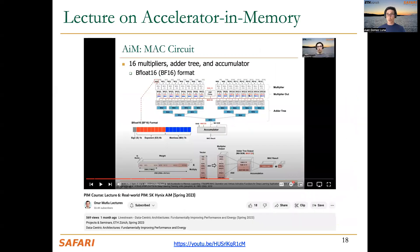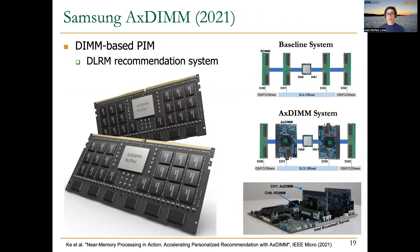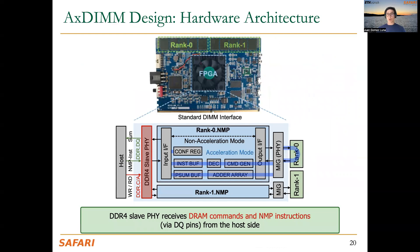Also from Samsung, a DIMM-based solution — in this case they extend the buffer of the DIMM with an FPGA that can be programmed. In this course we covered a design used for recommendation systems. In the FPGA, two near-memory processing units are implemented, each with the necessary units to execute the sparse feature commands of recommendation systems.